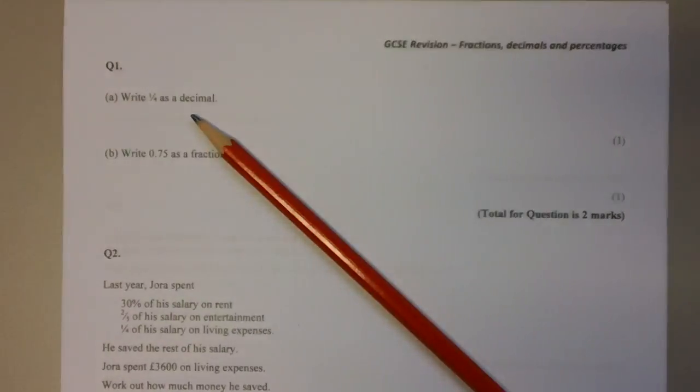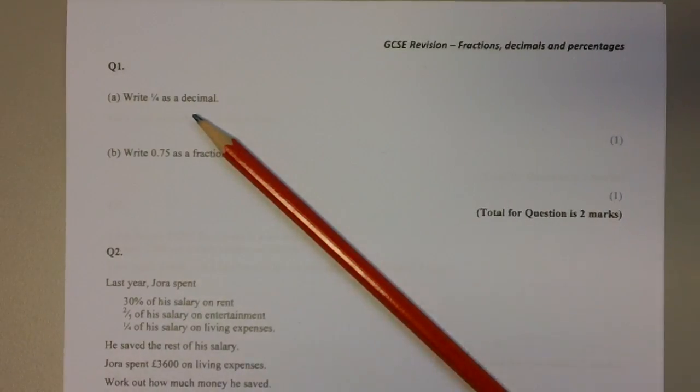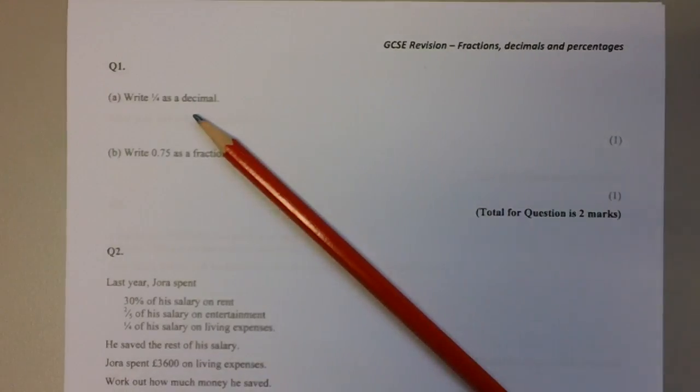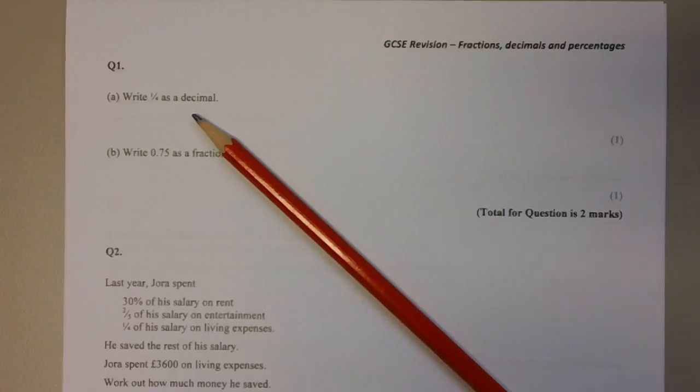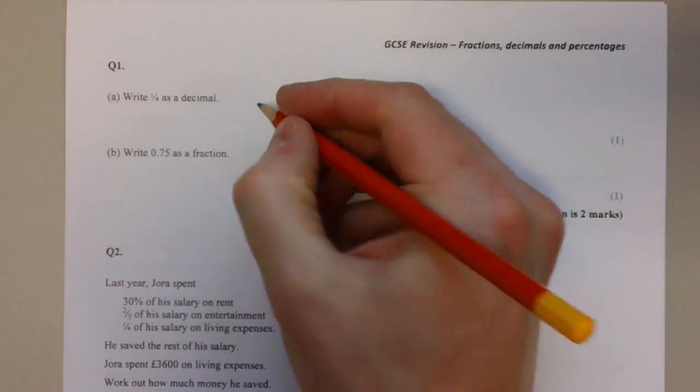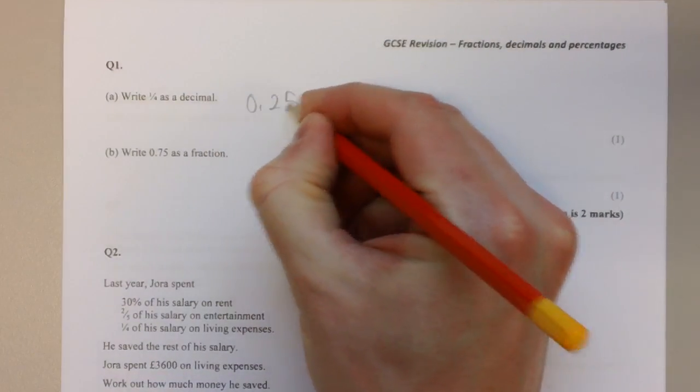These are solutions to the GCSE revision worksheet on fractions, decimals, and percentages. Question number one: write the fraction one quarter as a decimal. One quarter is equal to 0.25.